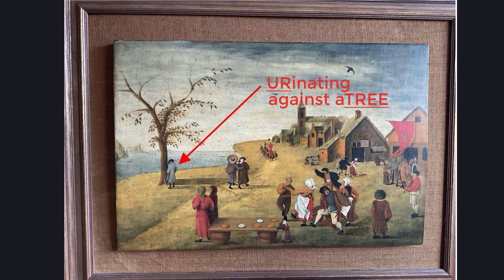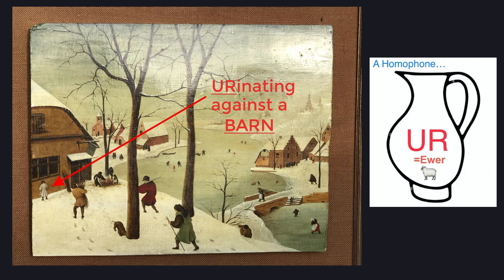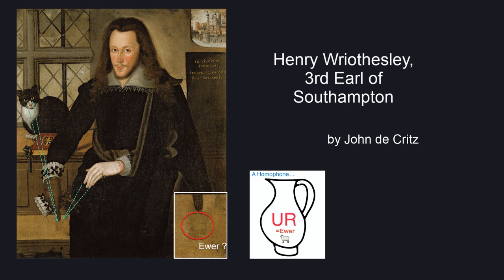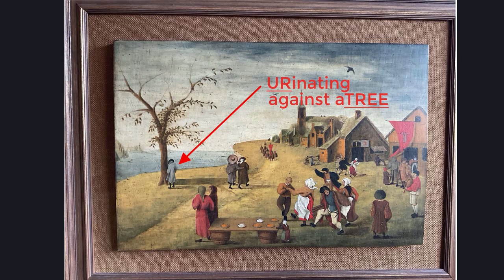He seems preoccupied with urinating to allude to the word 'ewer,' which is a jug or water carrier. You can possibly see one of his hidden ewers in this Tower of London painting of Henry Othusley, 3rd Earl of Southampton, where he is shown pointing to it directly. Even the cat seems interested.